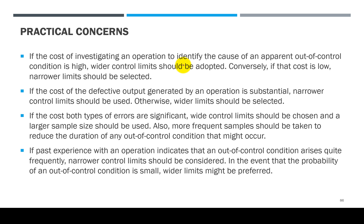The practical concerns — let me read them. If the cost of investigating an operation to identify the cause of an apparent out-of-control condition is high, wider control limits should be adopted so that your system is less sensitive. Conversely, if the cost is low, narrower limits should be selected. If the cost of defective output generated by an operation is substantial, narrower control limits should be used; otherwise wider limits should be selected. If the cost of both types of error are significant, wider control limits should be chosen and a larger sample size should be used.